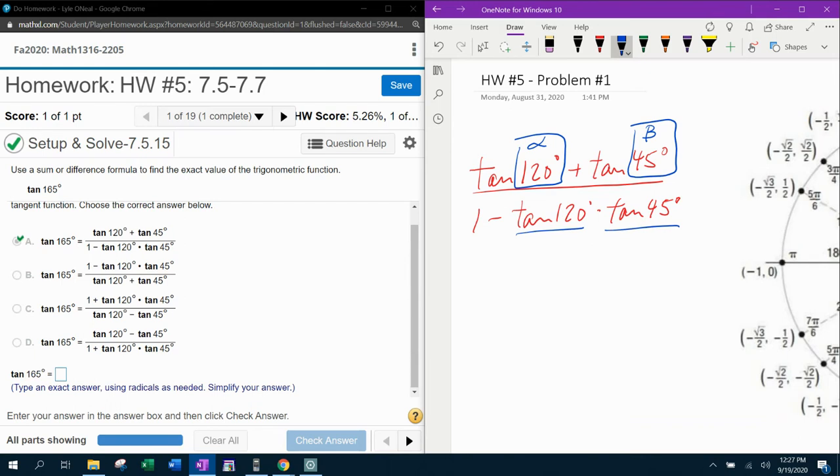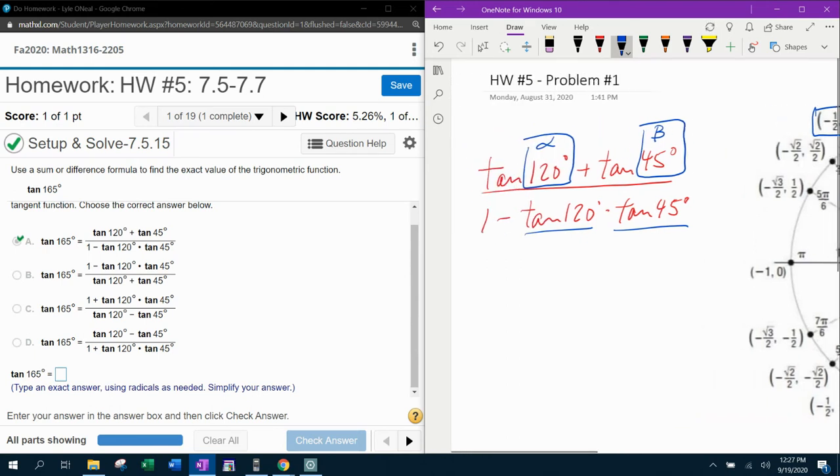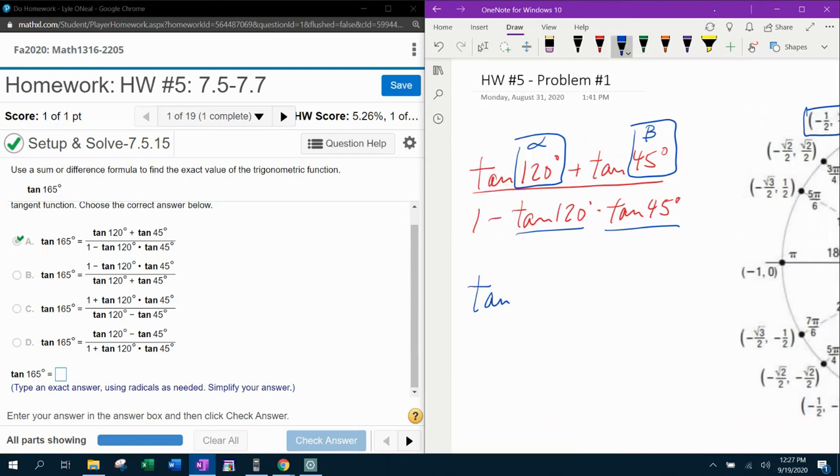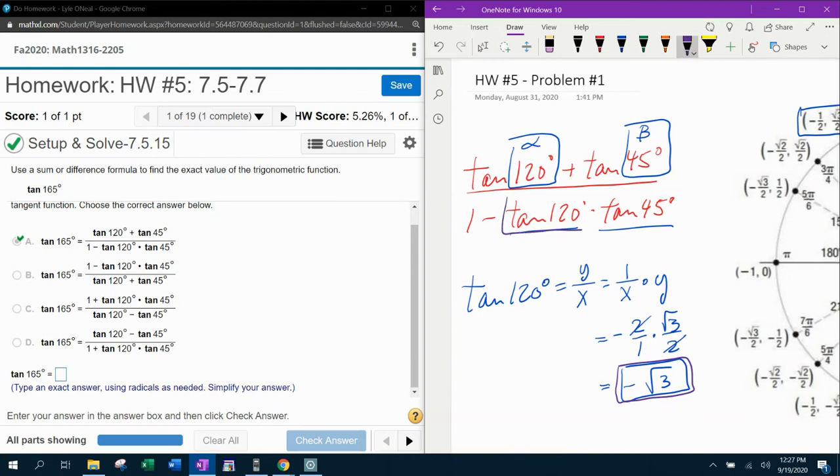Once I get those two values, they're going to repeat down here in the denominator. So let's go to 120 degrees, which is this ordered pair. And we know that tangent of 120. Remember tangent is y over x, which is the same as the reciprocal of x times y, is going to be negative two over one times square root of three over two. And those twos will cancel and give me negative square root of three. So now what I have is the value that I'm going to substitute for both of these tangent of 120s.